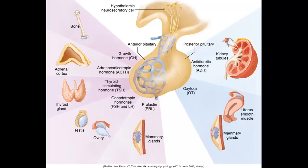This illustration shows where different hormones come from - anterior versus posterior pituitary. From the posterior pituitary: anti-diuretic hormone acts on the kidney, and oxytocin affects mammary glands and uterine smooth muscle. From the anterior pituitary: growth hormone, ACTH (adrenocorticotrophic hormone), thyroid stimulating hormone, gonadotrophic hormones, and prolactin. The pituitary only needs to secrete small amounts of these to maintain homeostasis in the body.